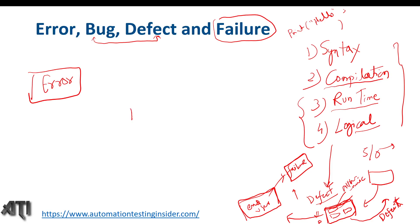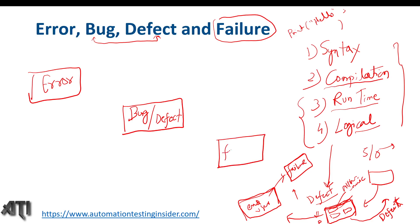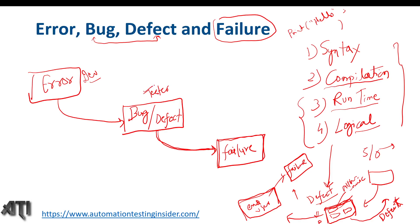Now how do we relate error, bug, defect, and failure? Error leads to bugs and defects in the software, and bugs and defects lead to failure. Specifically, runtime error and logical error cause defects, and if we fail to catch those defects in the testing environment and release the software to the customer, that leads to failure. So error belongs to the developer, bug and defect belong to the tester, and failure belongs to the customer.